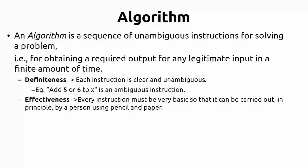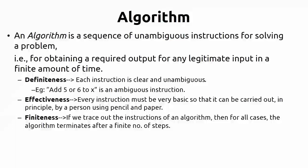The next property is effectiveness. Effectiveness means every instruction must be very basic, so that it can be carried out in principle by a person using pencil and paper. Every instruction you write must be implementable. As mentioned, an algorithm at the next level is implemented as a program, meaning whatever instructions and symbols you have written must be implementable in any computer environment. That is why you need to write every instruction in basic form.